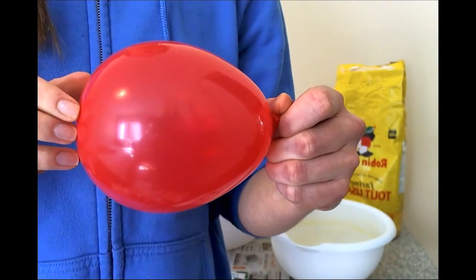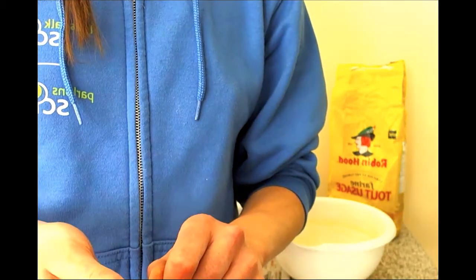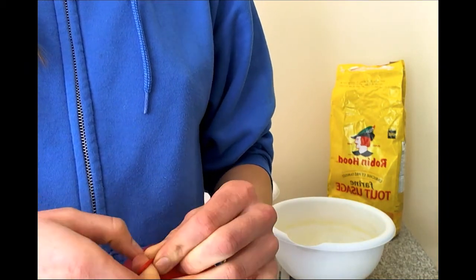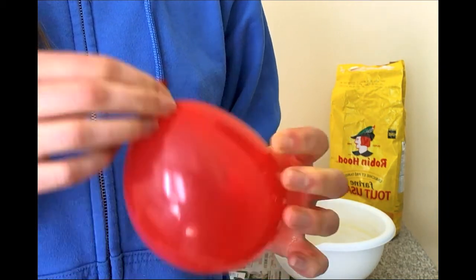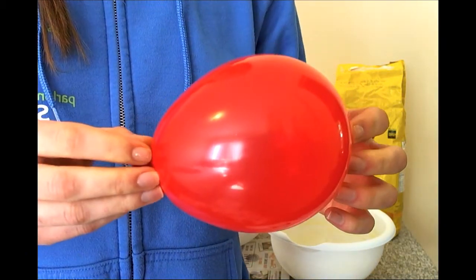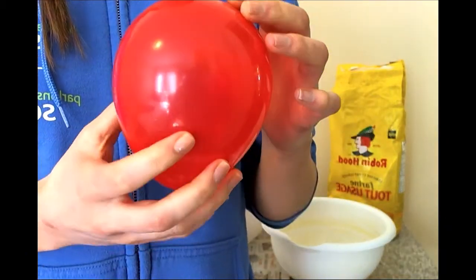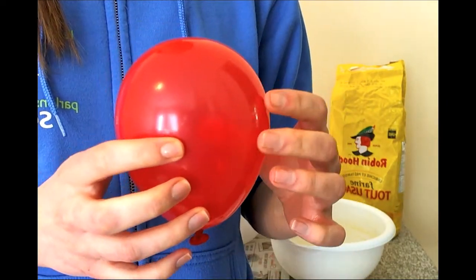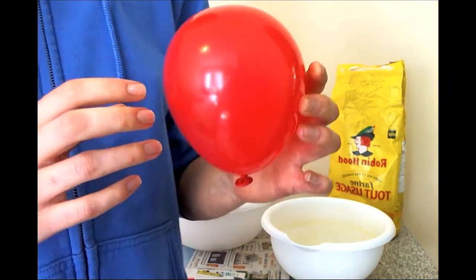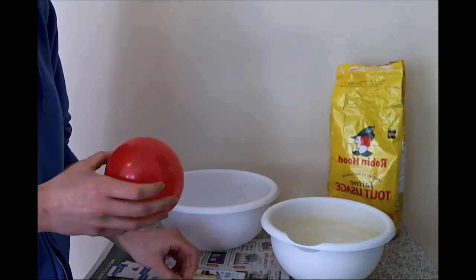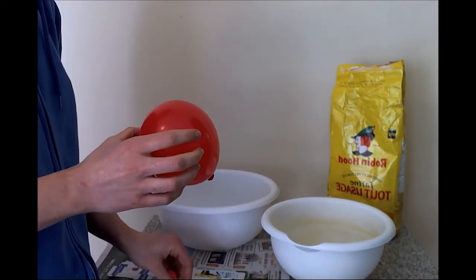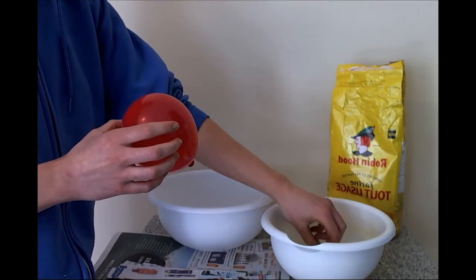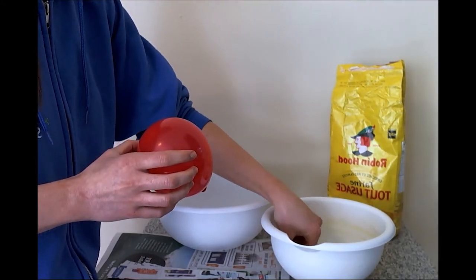We're just going to blow those up to various sizes. We've included the sizes of the balloons that you need to try to approximate in the PDF instructions attached to the video here. This is quite a big one, this would be about the size of Earth or Venus. What you're going to do to figure out exactly which planet is which is take a ruler and measure the diameter of the balloon at its widest point.